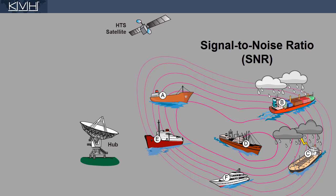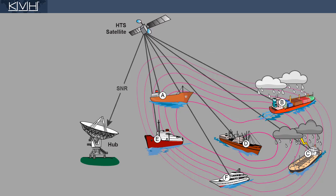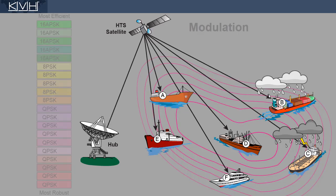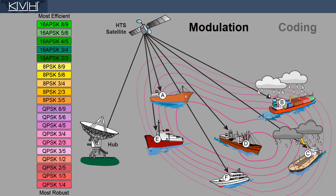On the HTS network, each vessel reports its current signal-to-noise ratio, or SNR, with every transmission. The hub will then deliver traffic to that vessel using the most efficient modulation and error correction coding its SNR can support. As conditions change, the MODCOD changes accordingly.